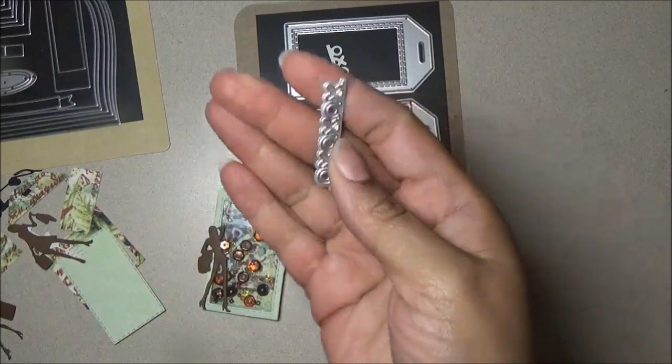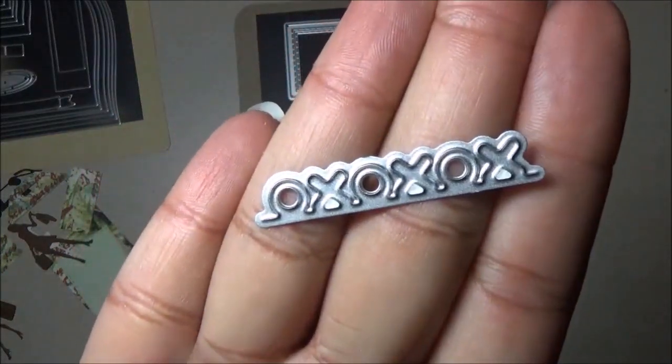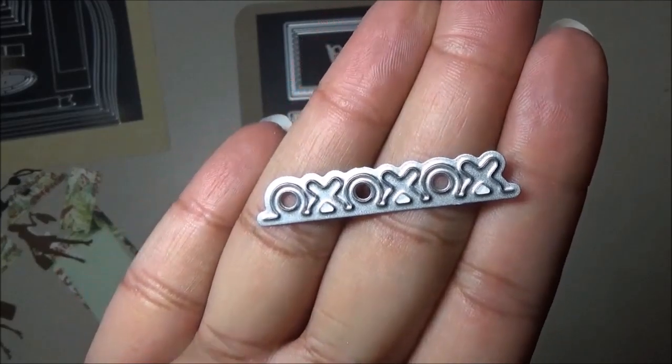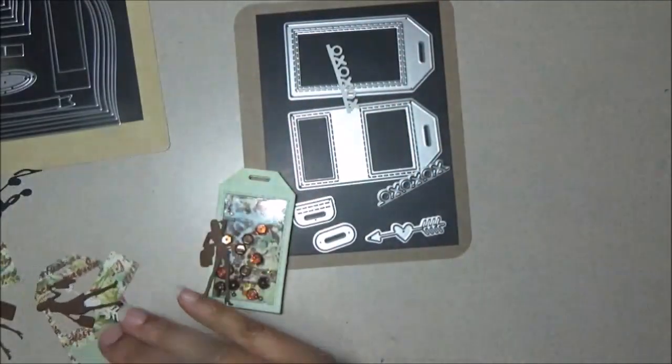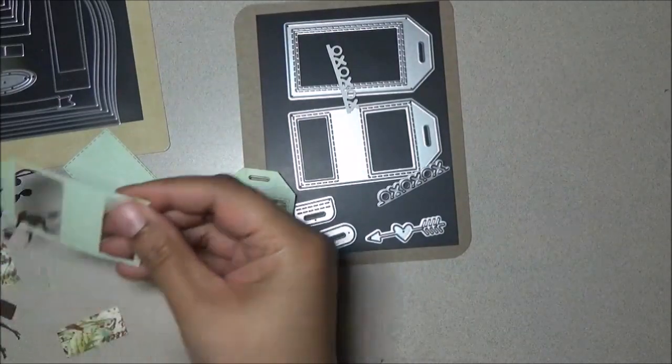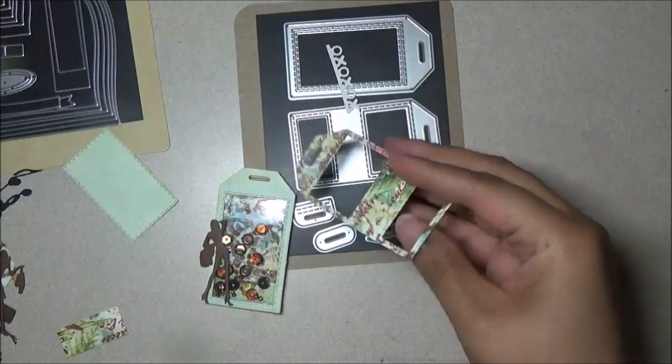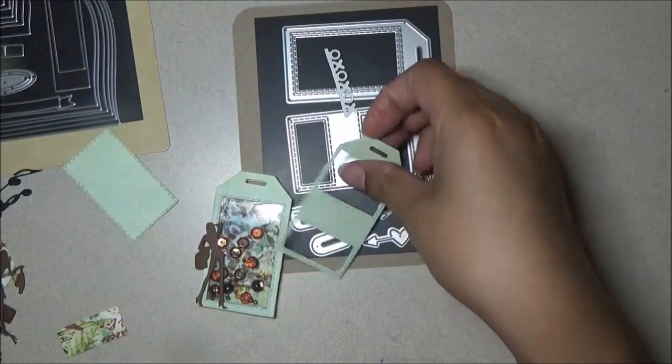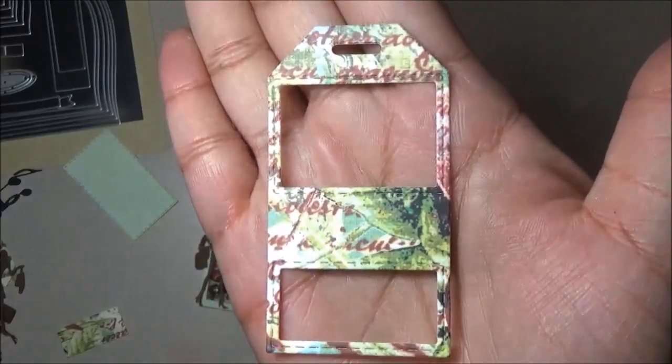So I'll show you what this looks like, the die. As you can see it has no edge at the bottom of the XOXO, so it just cuts on the edge. And this is how the other tag cuts. I guess you can make a shaker with that one.